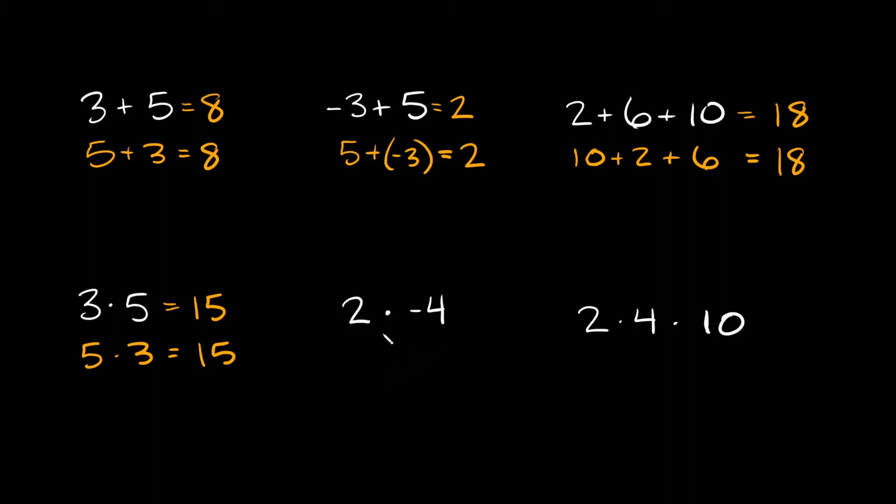And again, same thing with negative numbers, 2 times negative 4, well a positive times a negative is a negative, and then 2 times 4 is equal to 8, so negative 8. And then again, if you switch it around, negative 4 times 2, well you still get negative 8.